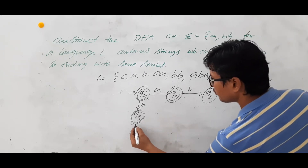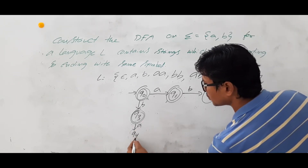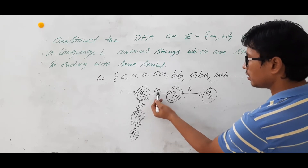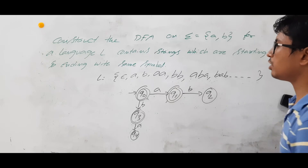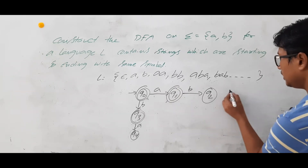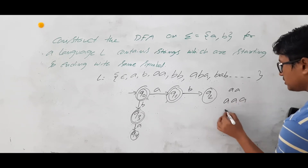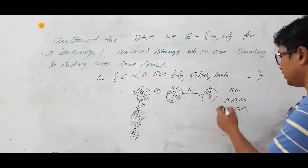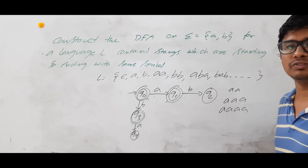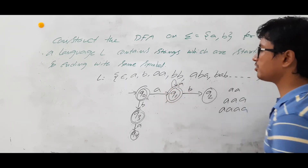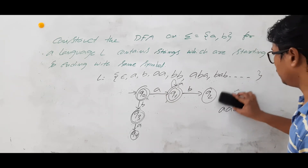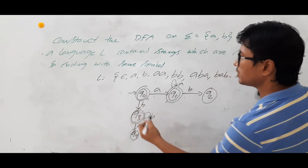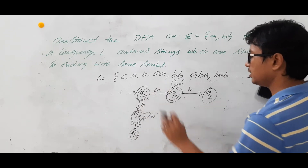Similarly, from Q2, if you are going to A, you should go to a state called Q4 where you should not accept it. Now Q0 on A and B we have discussed. Q1 on B we have discussed. For Q1 on A: it should accept two A's, three A's, four A's — any number of A's — because once you start with A, any number of A's will start with A and end with A, same symbol. So on any number of A's, you should go to Q1 itself. Similarly for Q3, once you reach any number of B's, you should remain in Q3.